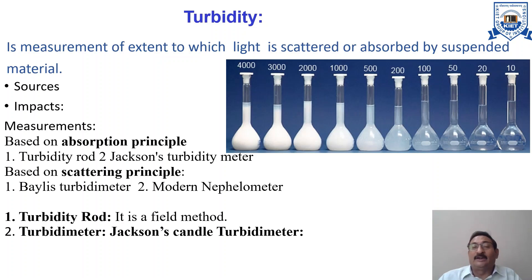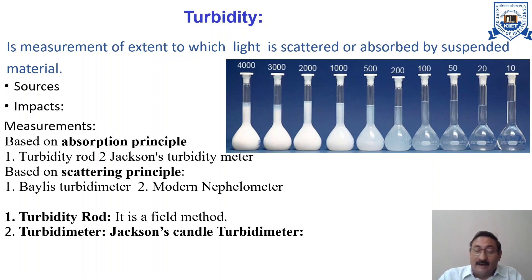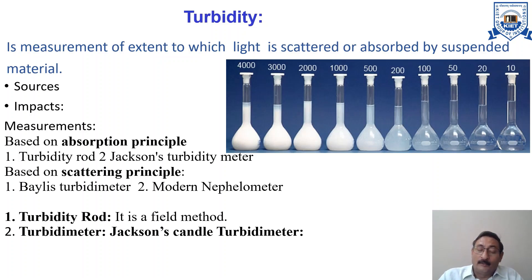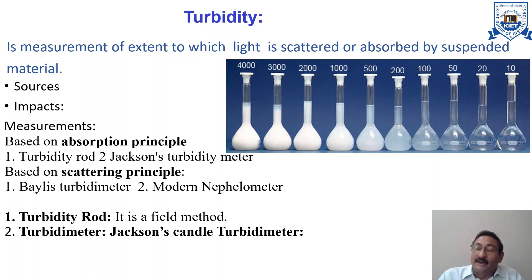The sources of material causing turbidity are the result of erosion of colloidal material such as clay, silt, rock fragments, and metal oxides from the soil. Vegetable fibers and microorganisms also contribute to turbidity. Detergents and emulsifying agents produce stable colloids which also result in turbidity.